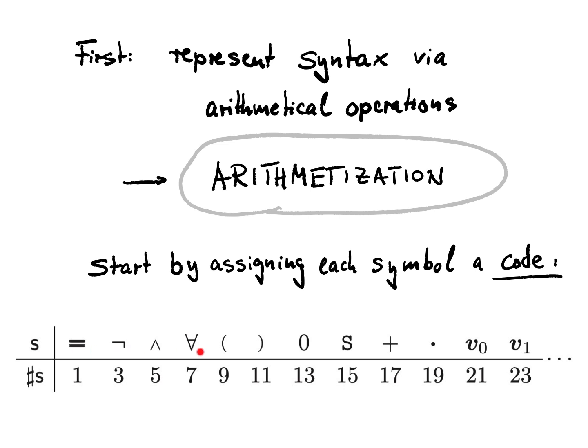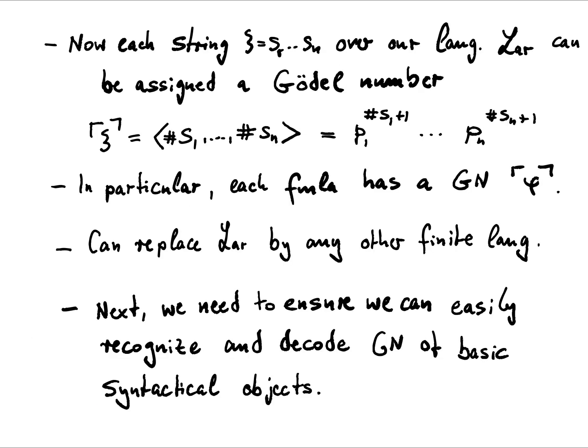So here's the symbols of our language: equals, not, and, for all, and so on. And we also have infinitely many variable symbols. So we just line up the symbols in this order and assign each of those symbols an odd number. It has certain technical advantages to use odd numbers here, as we will see later, but there's really various ways, or actually myriads of ways to do this. And this is just one example to do it.